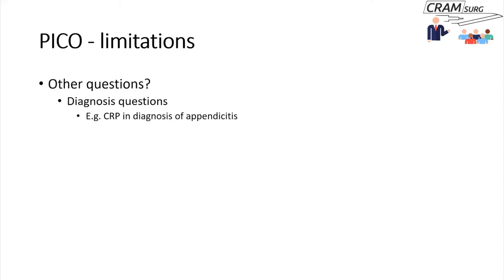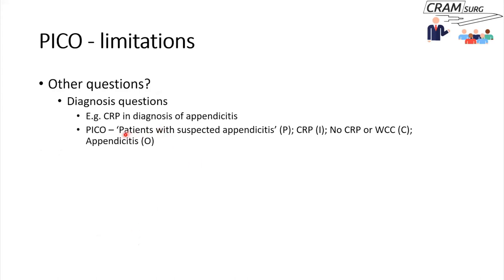What about other questions? Diagnostic questions are a problem. For example, if you're interested in knowing what the diagnostic utility of CRP in appendicitis is, you could say patients with suspected appendicitis would be your population, CRP would be your intervention — it's not really an intervention, but you could assume that — and no CRP or white cell count as your comparator. Your outcome could be whether appendicitis is the final diagnosis or not.